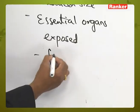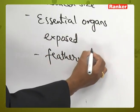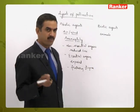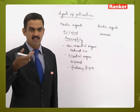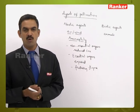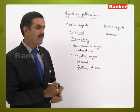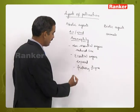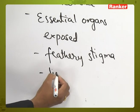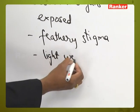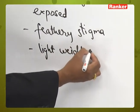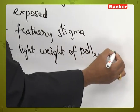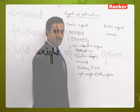Feathery stigmas are another adaptation. When the feathery stigma is exposed to the environment, pollen grains moving through the air get stuck to the feathery stigma so they will not escape. Additionally, pollen grains should be light in weight so they can easily be carried by the wind.